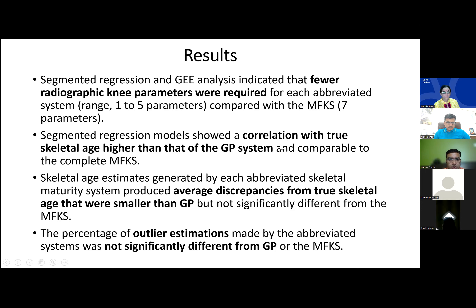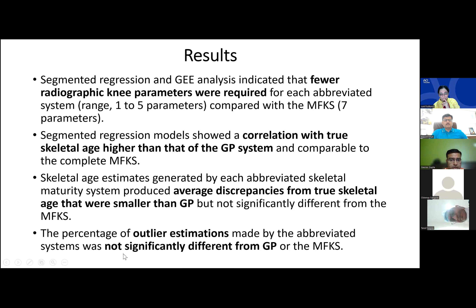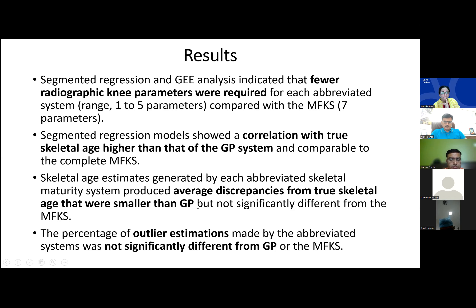Correlation of these four abbreviated systems with true skeletal age was higher than the GP system and comparable to the complete modified Fells system. Average discrepancies from true skeletal age were lesser than the GP system but not significantly different from the modified Fells knee system. The percentage of outlier estimates was not significantly different from either the GP system or the modified Fells knee system.